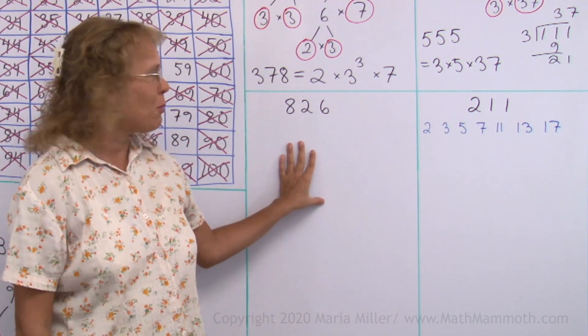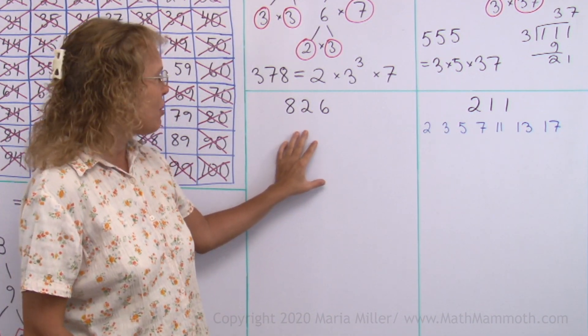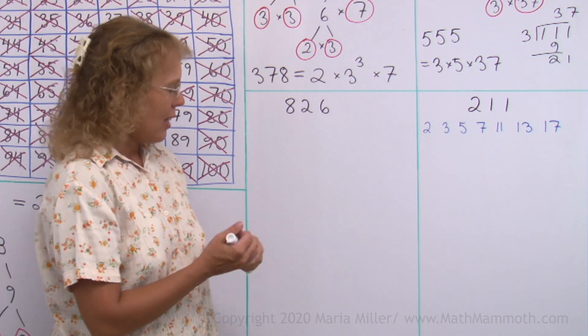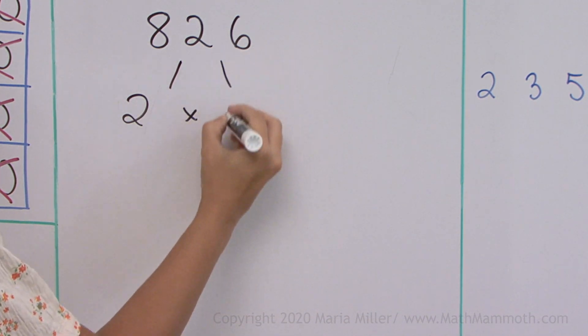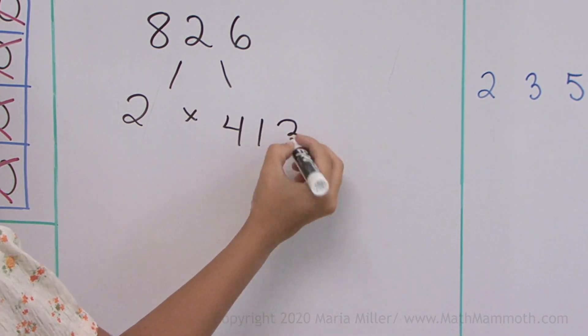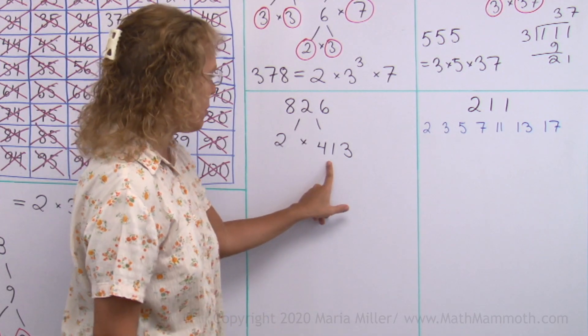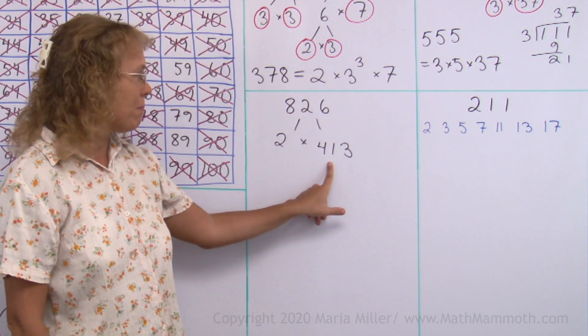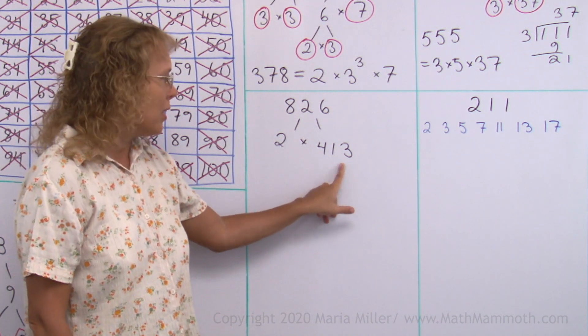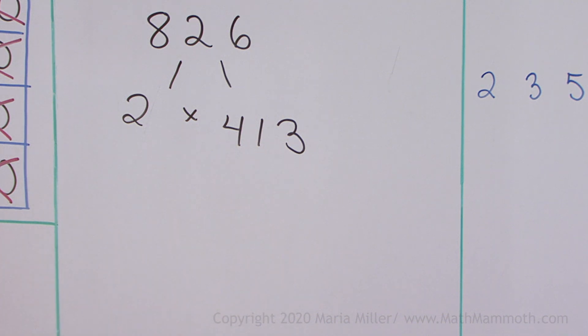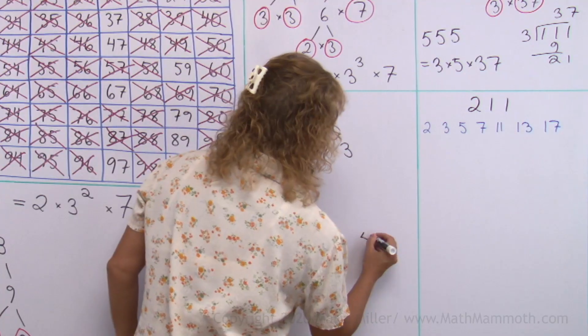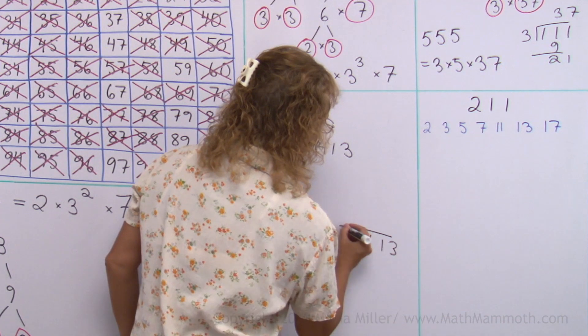Next one. How would you start factoring this one? 826. I think we will notice that it is an even number, 2 times something. We have 413. And now we will check if we can divide this by 3. No, because its digit sum is 8. It's not divisible by 3. Is it divisible by 5? No. How about by 7? I cannot tell unless I divide, so we are going to test divide it by 7.